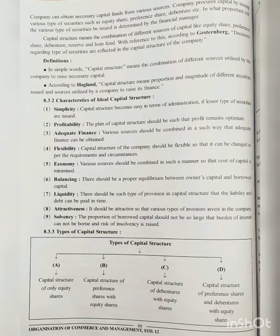Second is profitability — the plan of capital structure should be such that profit remains optimum, so that we can earn more profit. Third is adequate finance — various sources should be combined in such a way that adequate finance can be obtained.